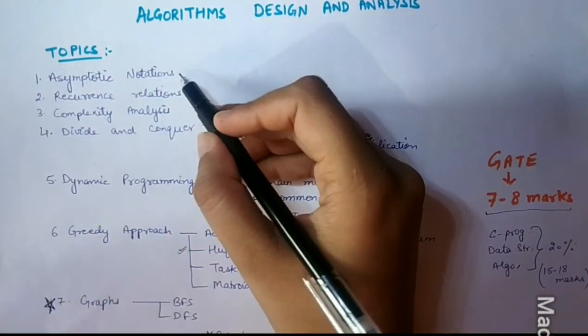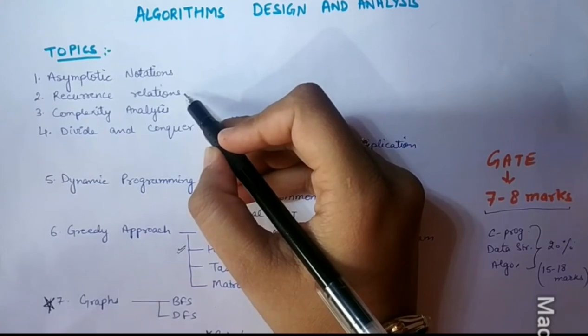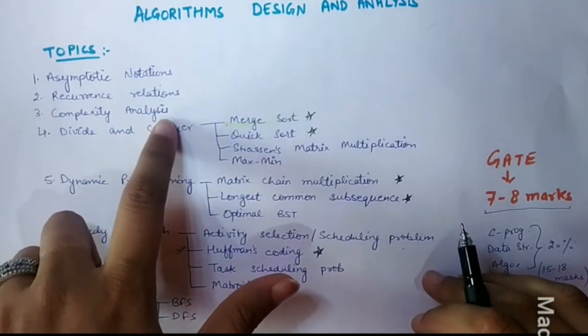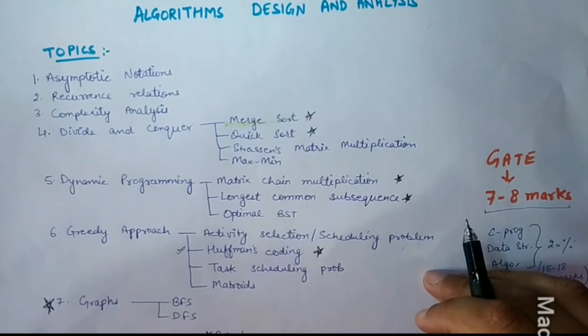Asymptotic Notations. Second topic is Recurrence Relations. Third topic is Complexity Analysis, where we will find the functions and a few algorithms.